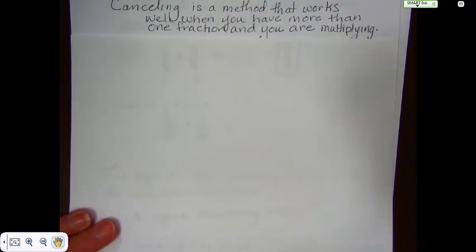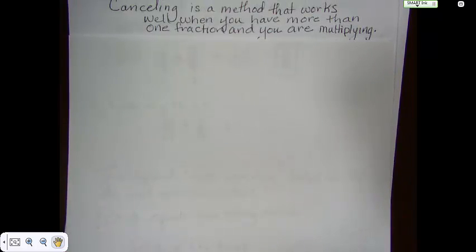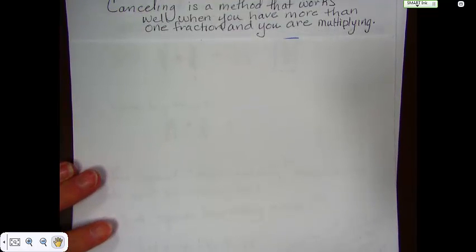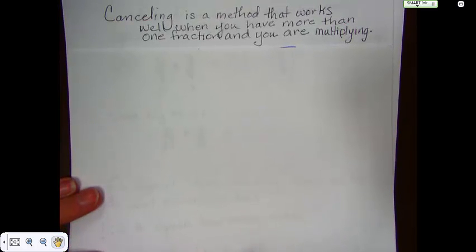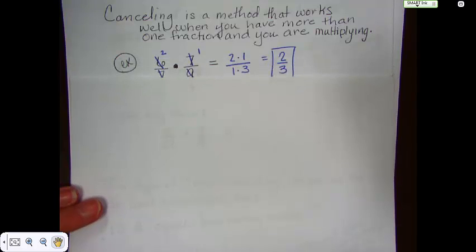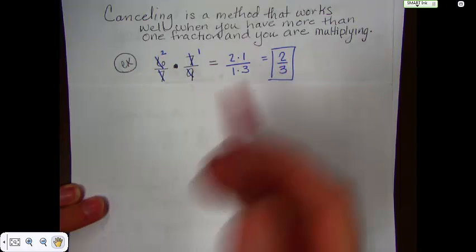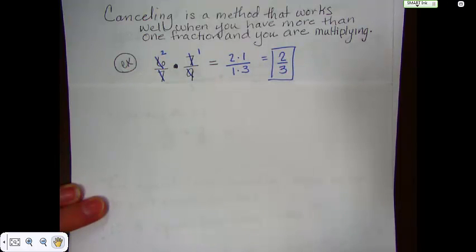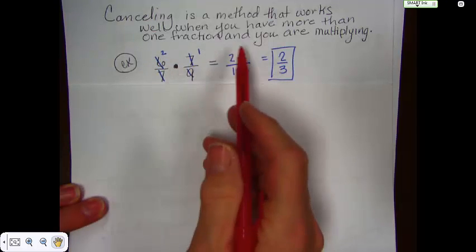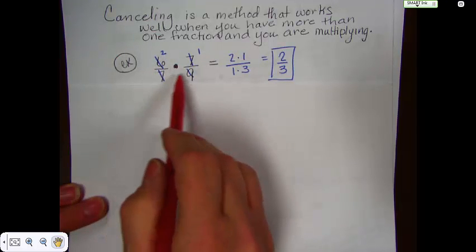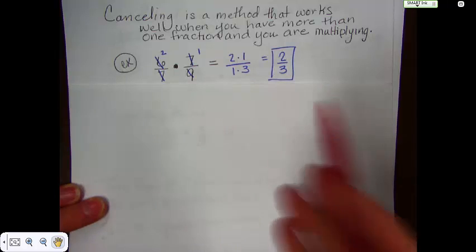Okay, canceling. Canceling is a method that works well when you have more than one fraction. That works well with just one fraction. But, canceling is something I like to use when you are multiplying and you have more than one fraction. For instance, here's an example. I used canceling to reduce these two fractions so that I could come out with a reduced fraction answer. I could have just multiplied 6 times 7 and got 42 over 7 times 9, which is 63, and then started reducing.